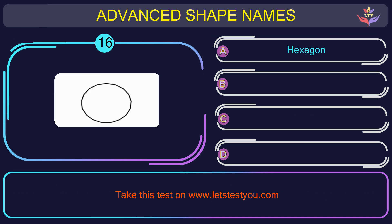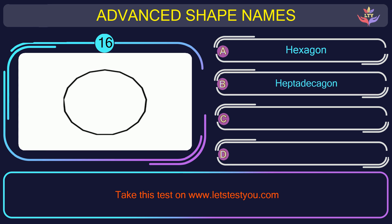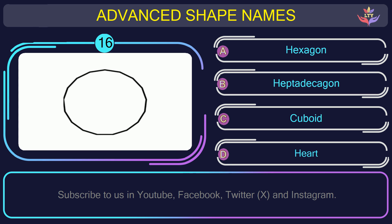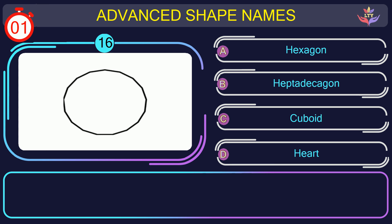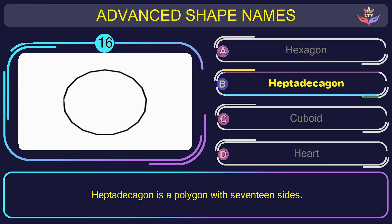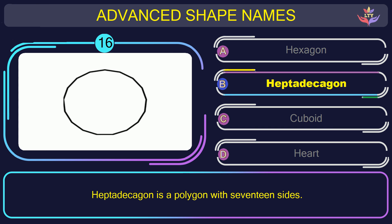Question number sixteen. Could you figure out the name of the shape in this picture? The correct answer is option C. Hendecagon. Hendecagon is a polygon with seventeen sides.